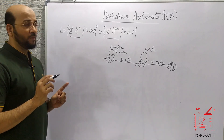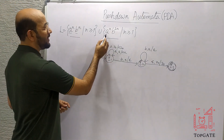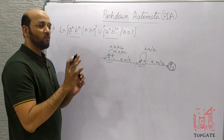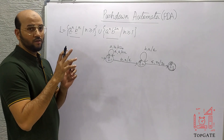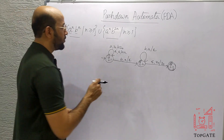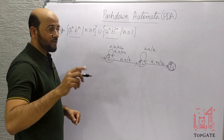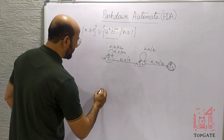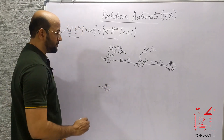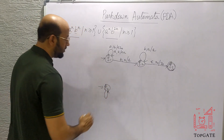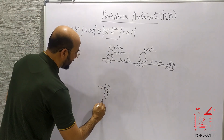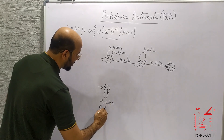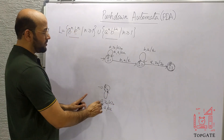Now for the a^n b^2n part: a comes, we push it; first b comes, we skip it; second b comes, we pop one a; third b skip; fourth b pop one a — and so on. I will take Q4 as the initial state. I will take a self loop for pushing the a's: a comes, topmost element is Z0, push it — a Z0. If a comes again and topmost element is a, we simply push it. So all the a's will be pushed in.